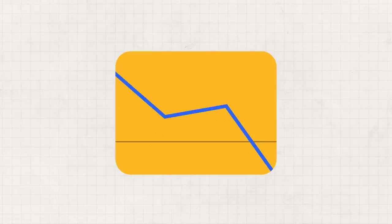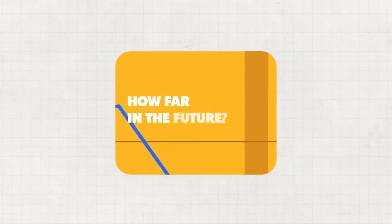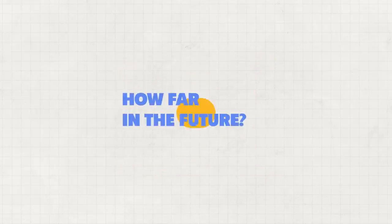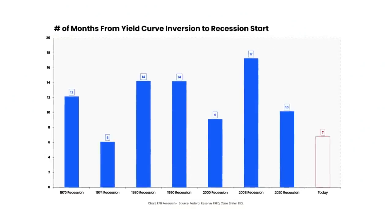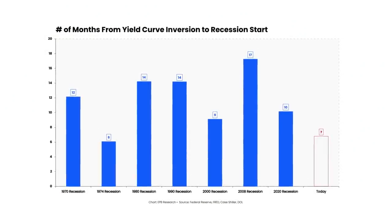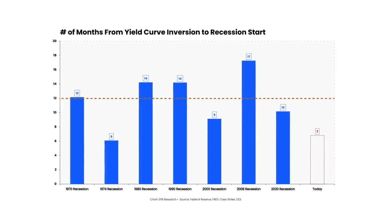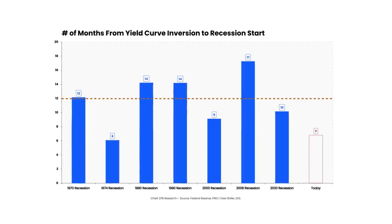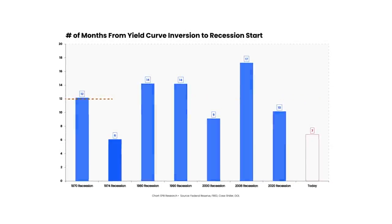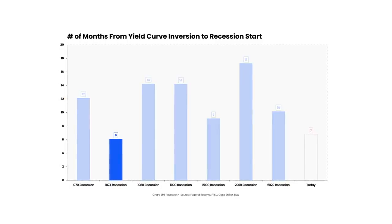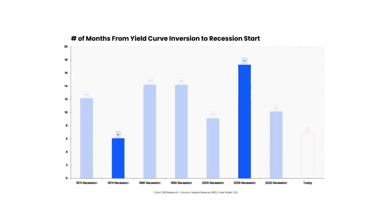When the 10-year 3-month spread turns negative, you can be sure a recession looms in the future. But how far in the future? When we ask these business cycle-related questions, the common answer is to use the mean or average of the historical range of outcomes. On average, a recession begins about 12 months after the 10-year 3-month curve inverts. But the true range of outcomes is quite wide, with only a 6-month lead time before the 1974 recession and a 17-month lead time ahead of the 2008 recession.